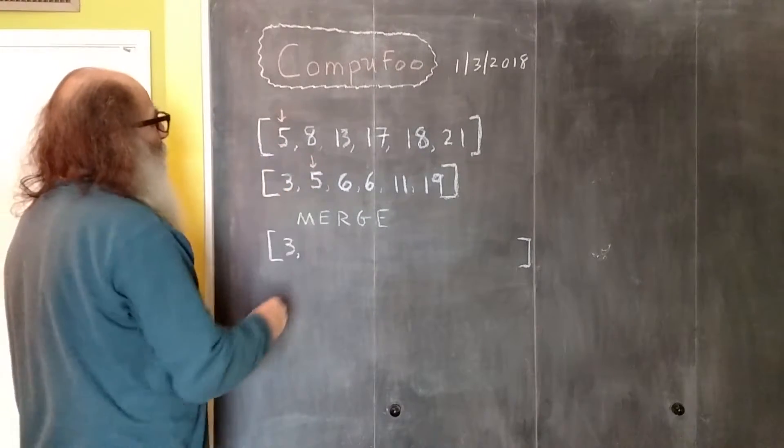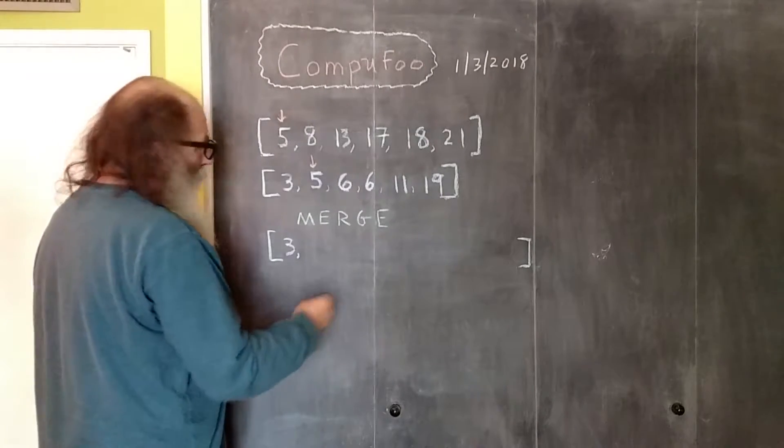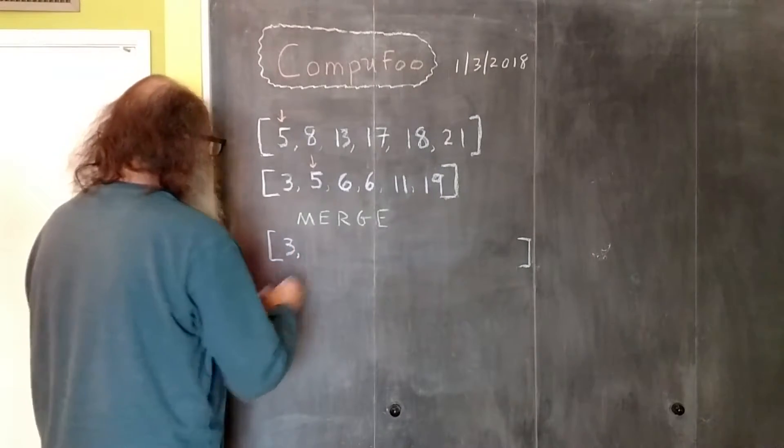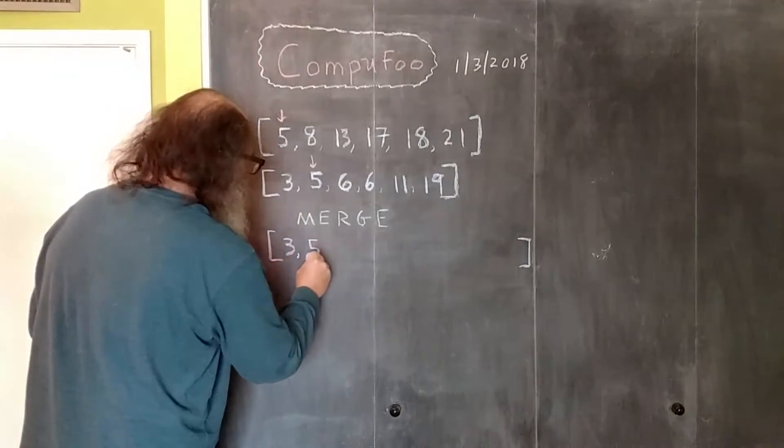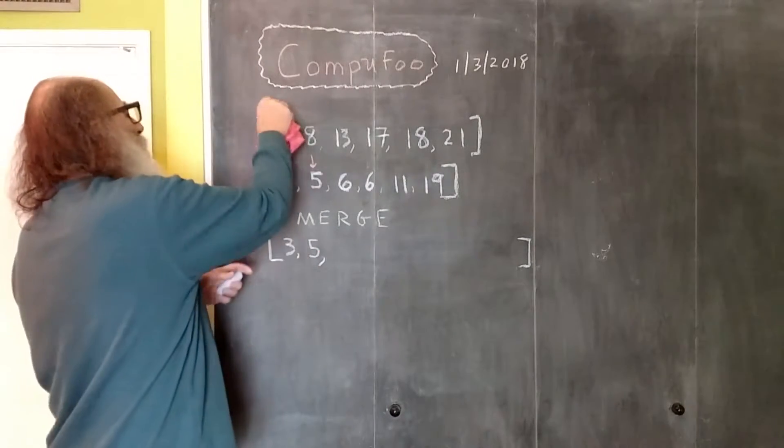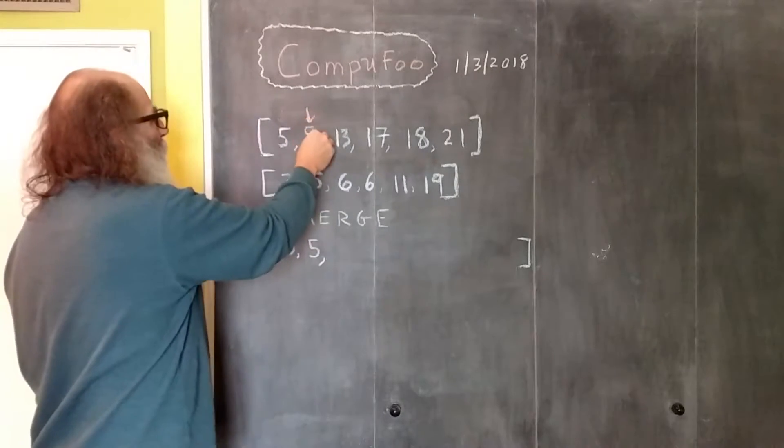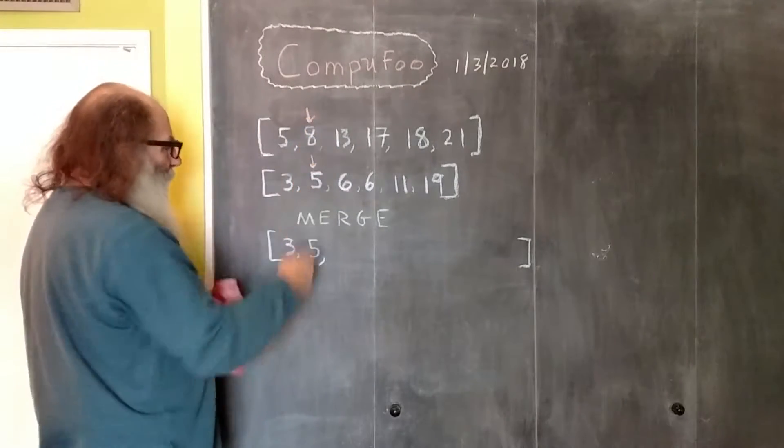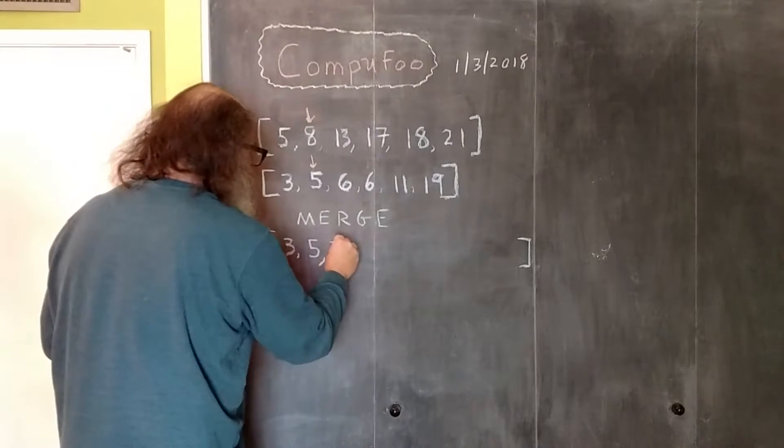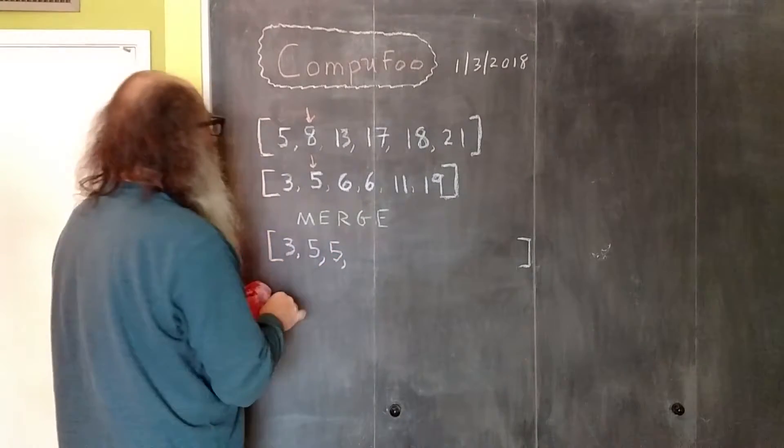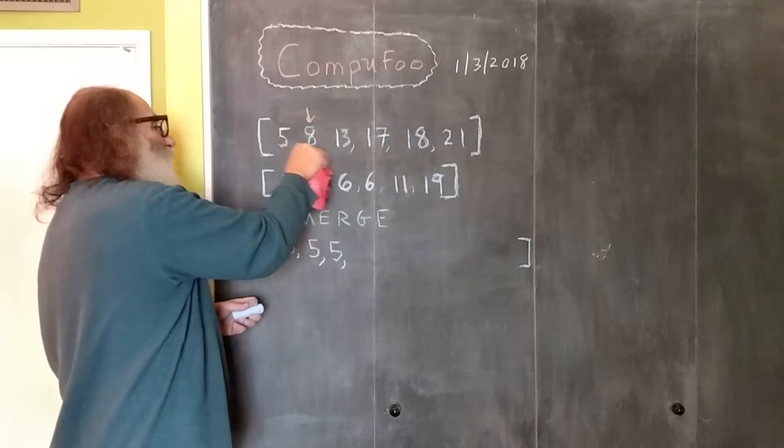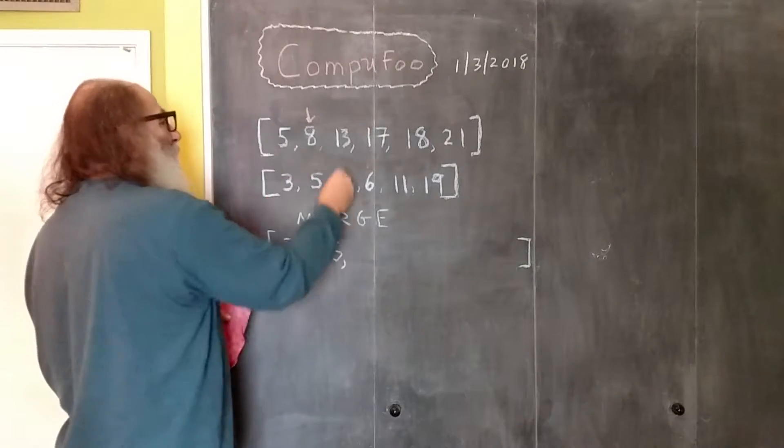Now is five less than five? Well, they're equal, so the five gets put into the array, and we adjust this pointer. Is eight less than five? No. So the five goes into the merged array. Since we process this one, we increment that pointer.